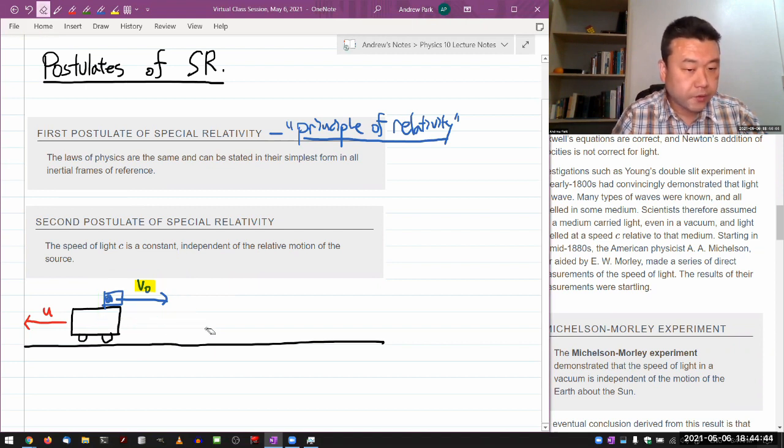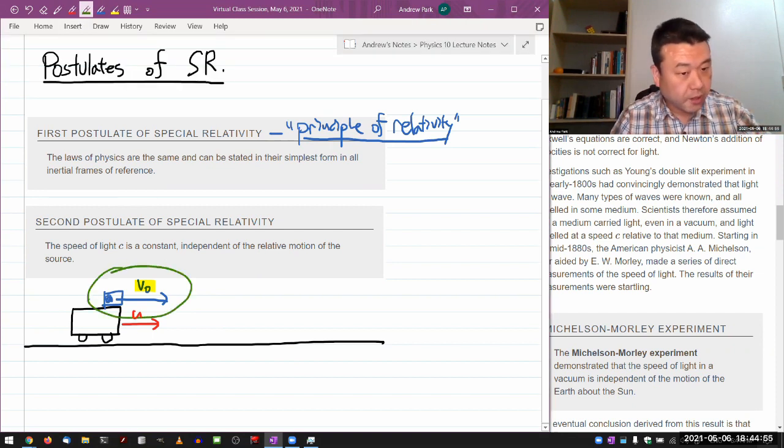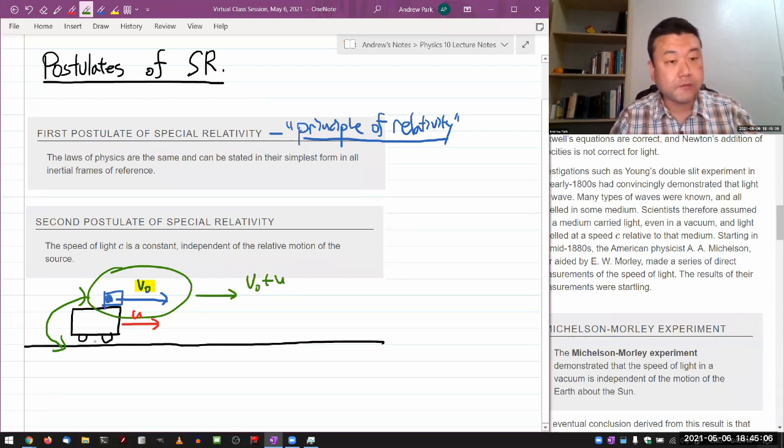In this scenario, I think most people after some time of thinking it through, you would say that the speed of the ball is v-naught minus u. Or if you change the picture so that the cart is actually moving in the same direction as the ball, then you would say, trying to measure the speed of this ball not relative to the cart but relative to the ground, you would intuitively say the ball should be moving at the speed v-naught plus u.